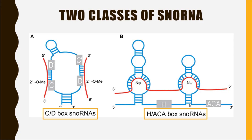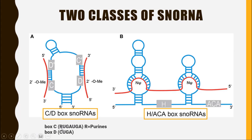These two classes have these complex names because they have some type of repetitive units. In C/D box snoRNA, the repetitive units are called Box C and Box D. Box C has the repetitive nucleotide sequence RUGAUGA, in which R can be any kind of purine — so it can be adenine or guanine. Box D has the repetitive nucleotides CUGA. In the picture, this blue line represents the small nucleolar RNA, and the gray portion shows the repetitive units Box D and Box C.